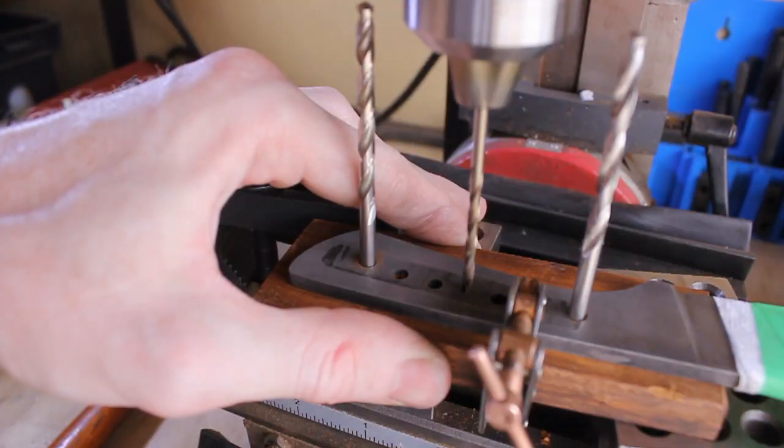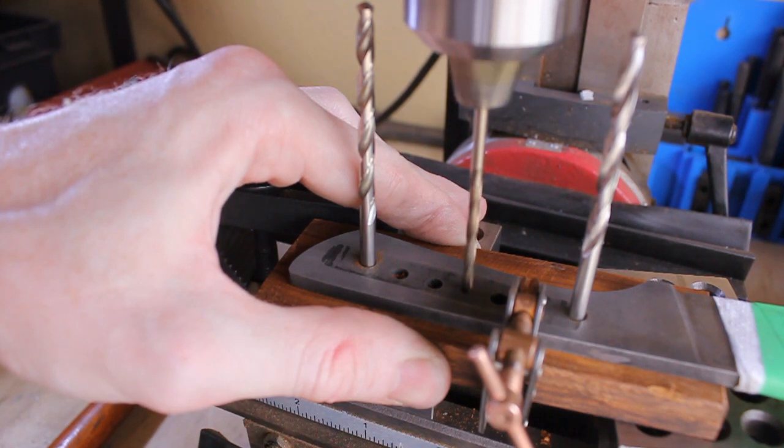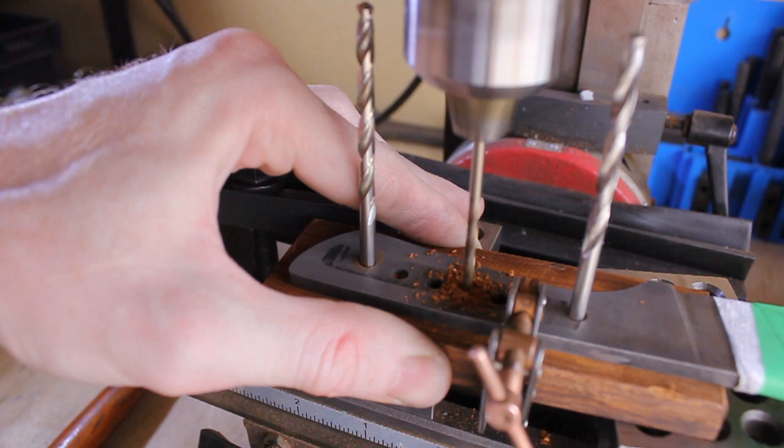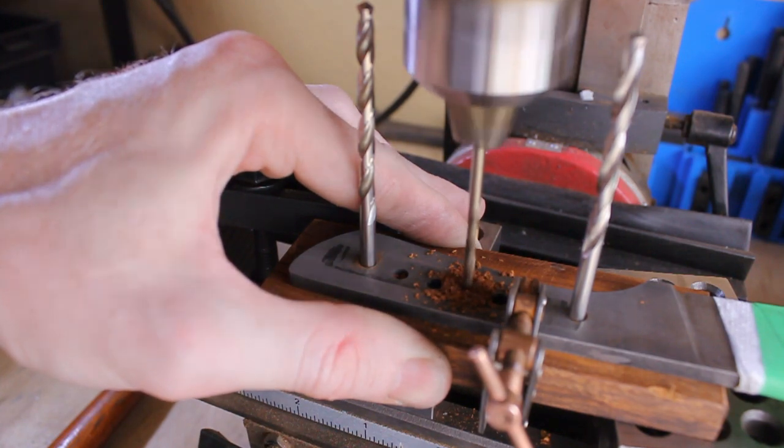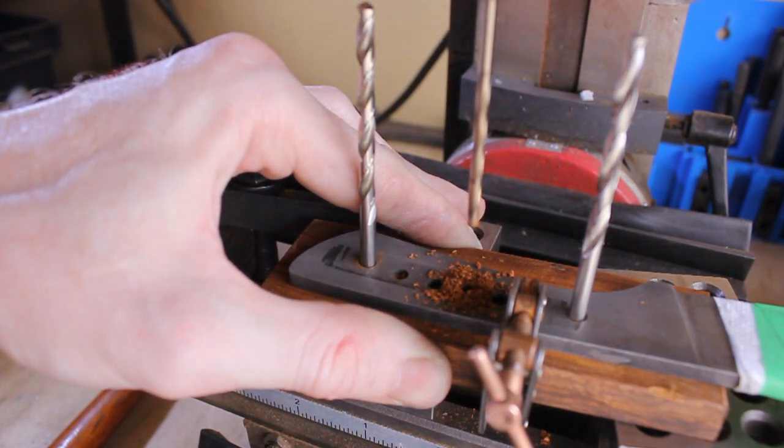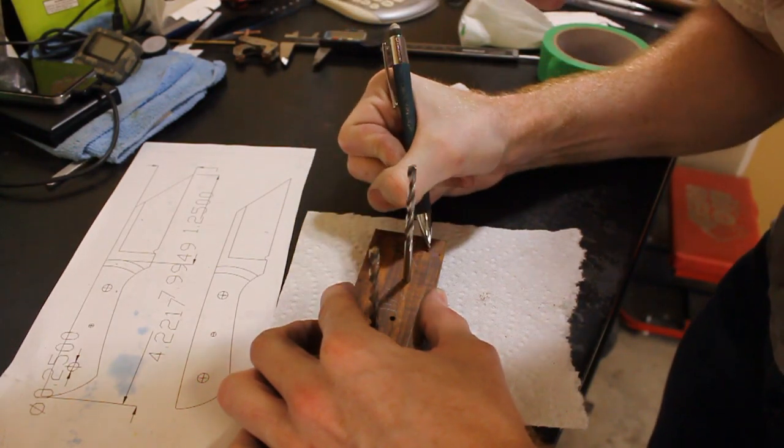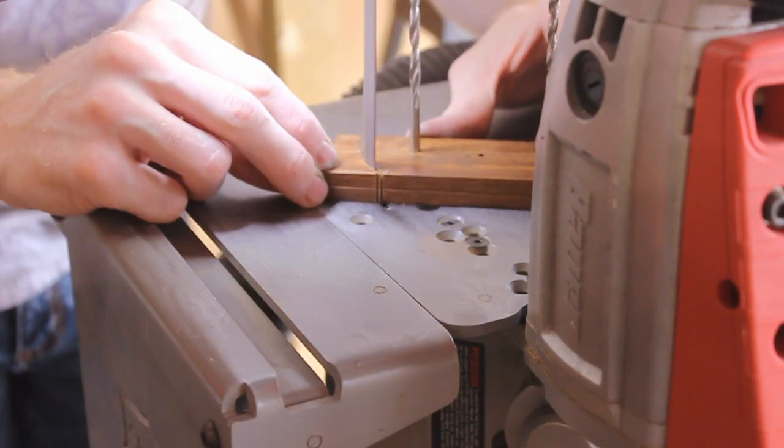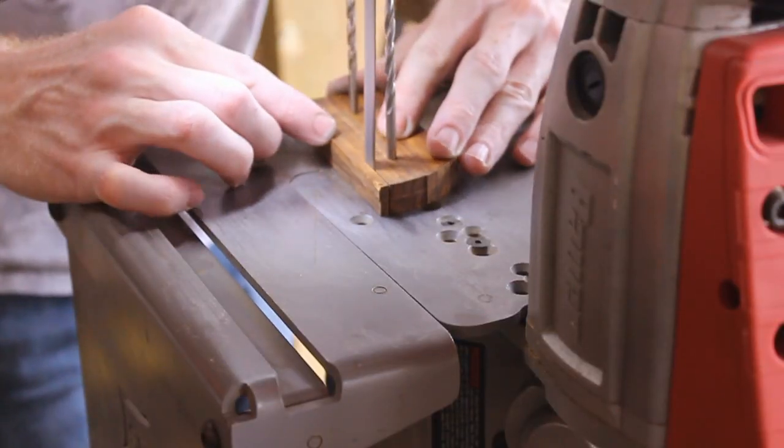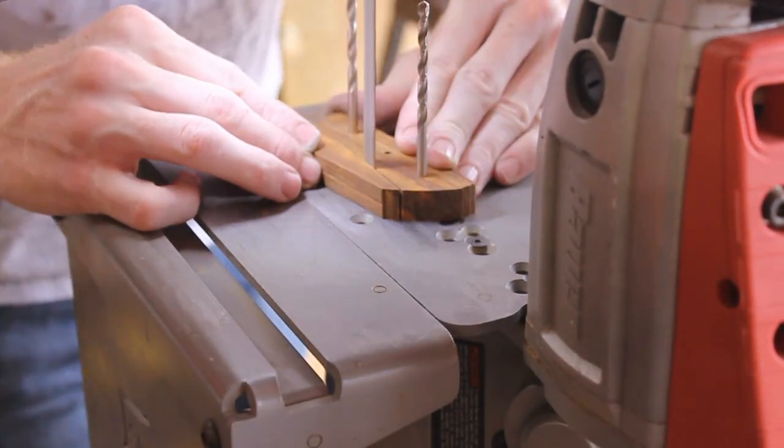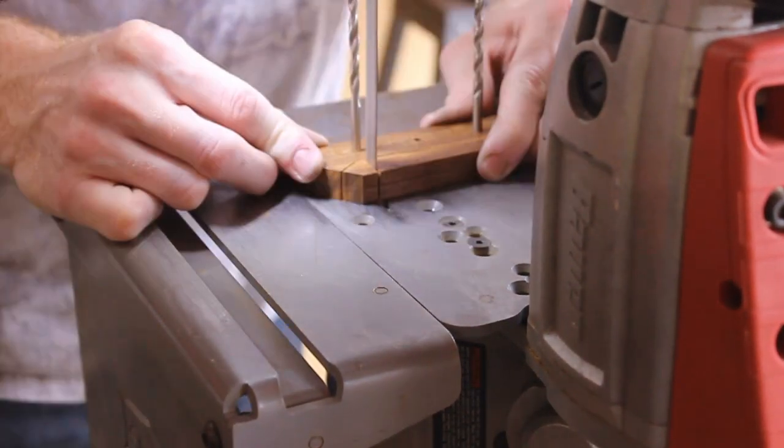I have some sweet ironwood from Pops Knife Supply here. I drilled two number 13 holes for my quarter inch Corby fasteners. They have a three sixteenths shaft. I found that number 13 is a little tighter. And in the center, I drilled a one eighth of an inch hole. That's going to be a one eighth of an inch mosaic pin eventually.